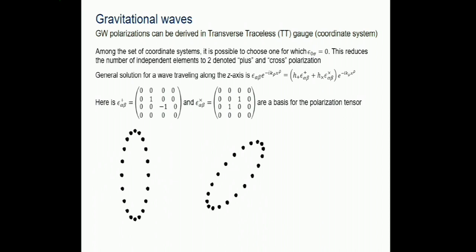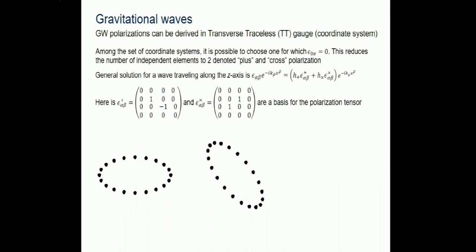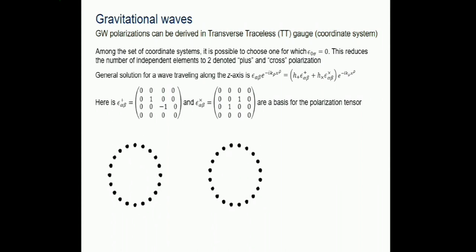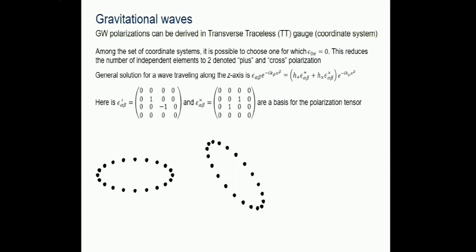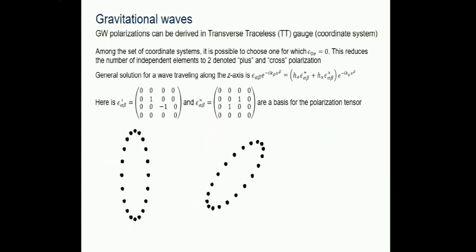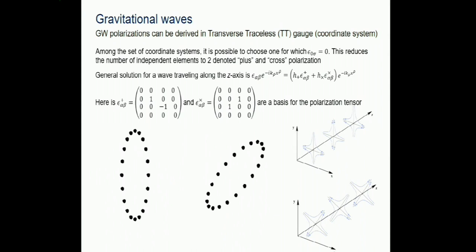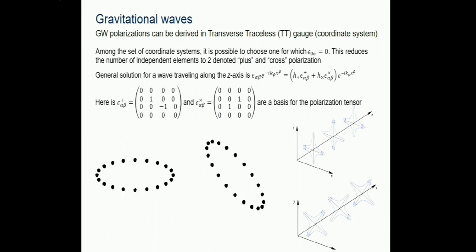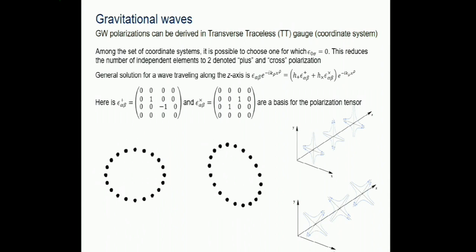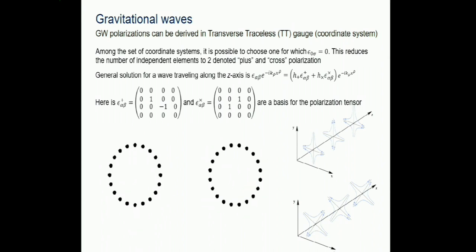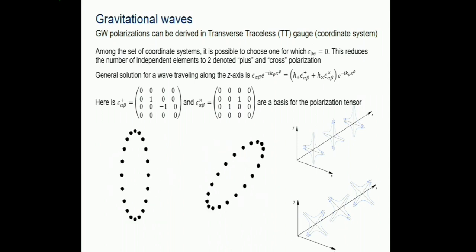The gravitational wave travels along the z-direction; its effects appear in the x and y directions. Free-floating masses placed in a circle get displaced - more precisely, the proper distance between them changes. General relativity gives two polarizations: h_plus and h_cross. The effect grows with the scale of the system - like a tidal effect. It is like pulling on elastic cloth: a very long stretch elongates much more than a short one when you pull on it. The displacement scales with the size.